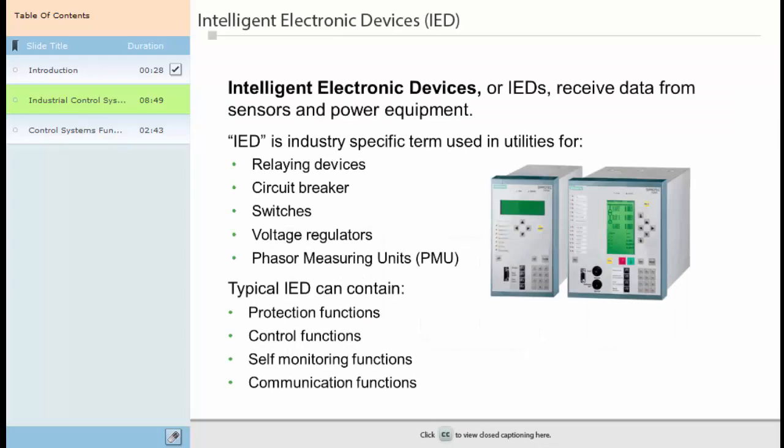Intelligent electronic devices, or IEDs, receive data from sensors and power equipment. They can issue control commands or raise and lower voltage as instructed. Common types of IEDs include relaying devices, tap changer controllers, circuit breakers, switches, and voltage regulators.